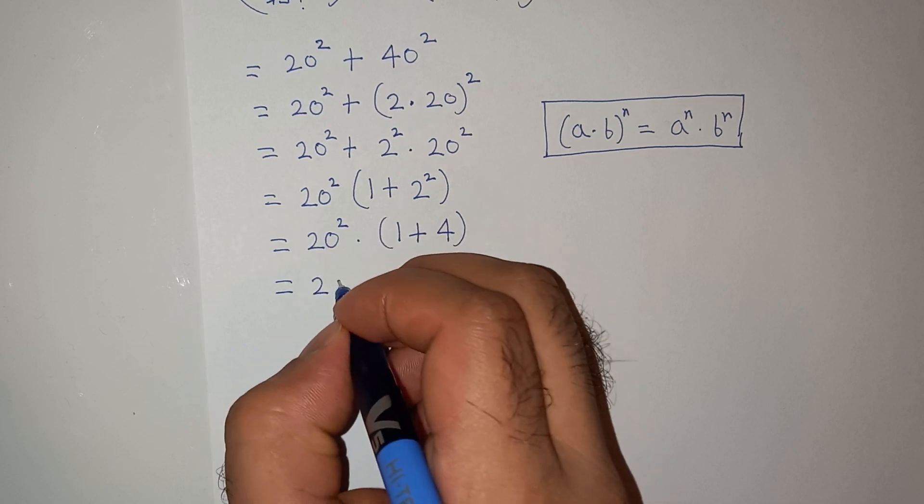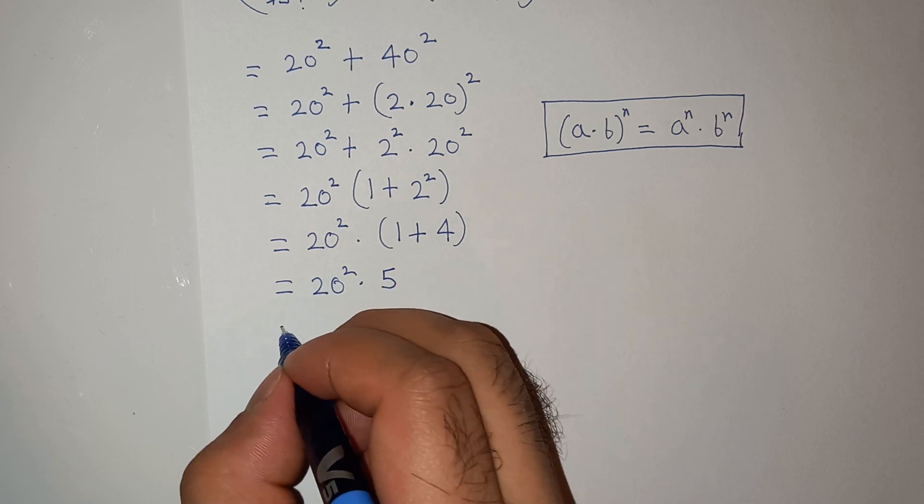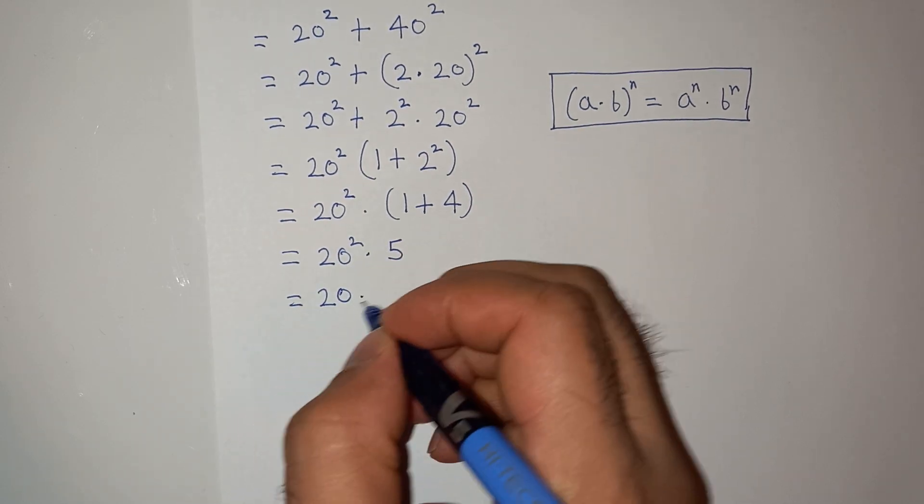Now this 20 square can be written as 20 multiplied by 20, and this 5.